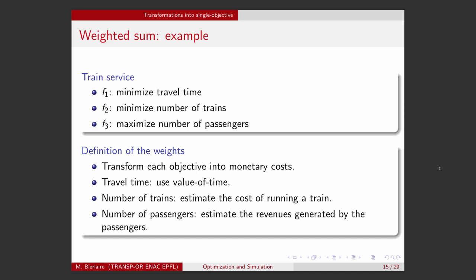So, these techniques allow us to transform each of these objectives into a monetary cost. And then, once you have three monetary costs, you can add them up to have a total cost. This is the objective function of the single objective optimization problem derived from this multi-objective optimization problem.